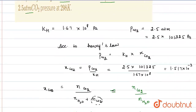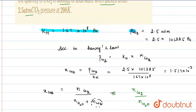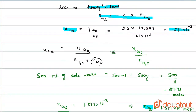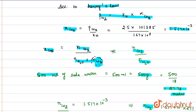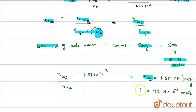So, what we have done: first, we were given the values of KH and partial pressure of carbon dioxide. After applying Henry's law, we found the mole fraction of carbon dioxide, which came out to be 1.517 × 10⁻³. Since the mole fraction is very small, we treated 500 ml as 500 gram to calculate moles of water. Then putting those values, total moles of carbon dioxide equals 42.14 × 10⁻³ moles. I hope you understand this question. Thank you very much.